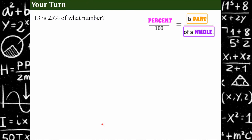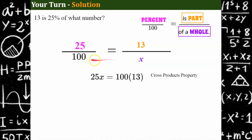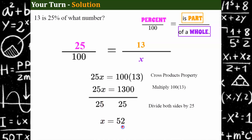Try another one. Please pause, create your percent proportion, use cross products to solve, then come back and hit play. Welcome back. So 13 is — that's my part — and 25% written as a ratio is 25 out of 100, and 'of what number' means I'm missing the whole. So 13 out of what whole value is equivalent to 25%? Cross products: 25 times x equals 100 times 13, giving 1300. Divide both sides by 25, and x equals 52. So 13 is 25% of 52.